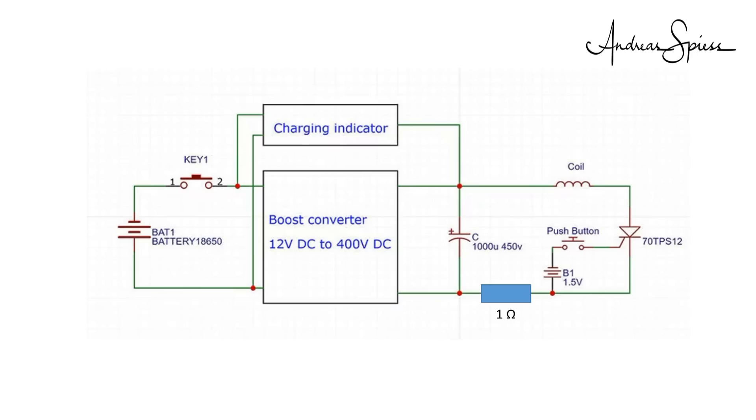What limited this current? Looking at the diagram, we see a capacitor, a shunt resistor, the thyristor, and the coil. The total resistance is 400 volts divided by 130 ampere equals around 3 ohms. One ohm comes from the shunt, which is quite a lot. The other comes from the internal resistor of the capacitor, the thyristor, the wires, and the coil itself. You can imagine that the current was even higher when I removed the shunt resistor.